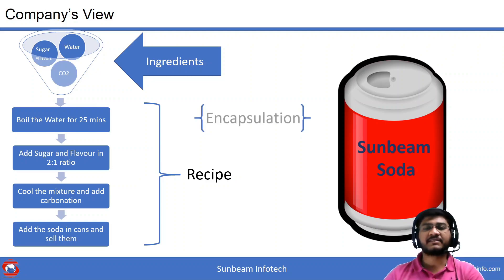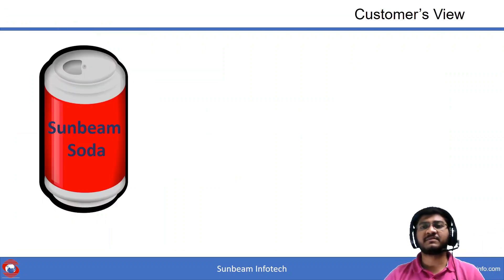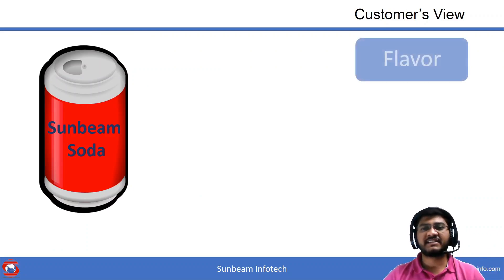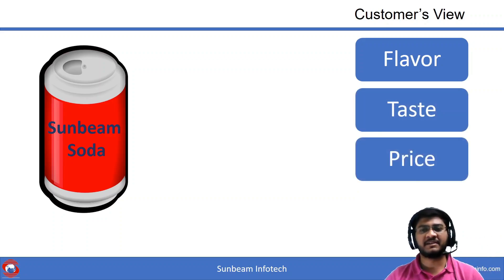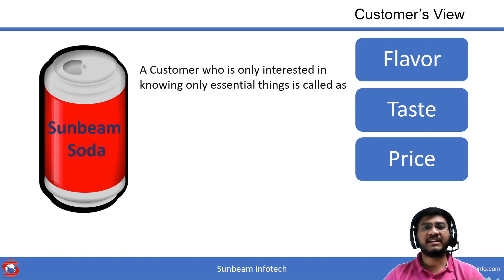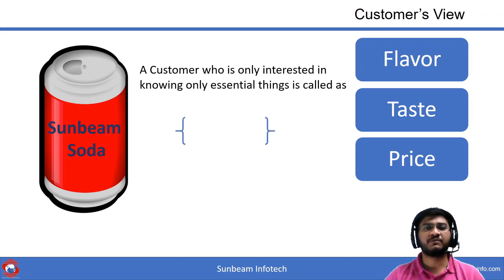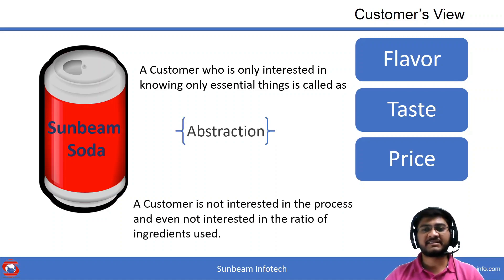Now let us look at this from the customer's perspective. The customer is only interested in the flavor of the soda — the taste and whether the flavor and taste justify the price point. The customer who is only interested in knowing the essential things, this is what we call abstraction. The customer is not at all interested in the process followed to create this particular soda.